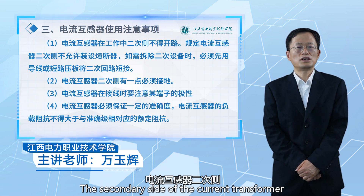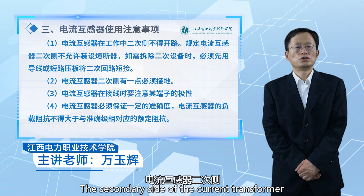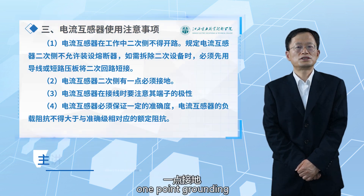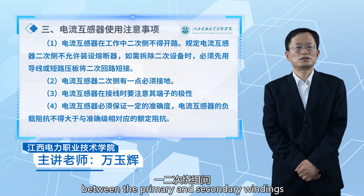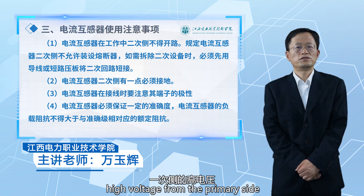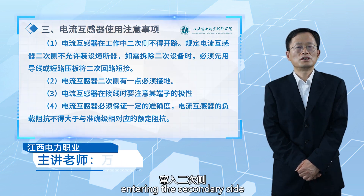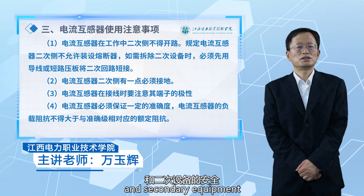The secondary side of the current transformer must have one point grounded. This grounding prevents breakdown of insulation between the primary and secondary windings, which could allow high voltage from the primary side to enter the secondary side, endangering the safety of personnel and secondary equipment.